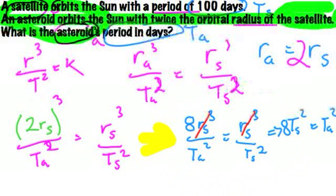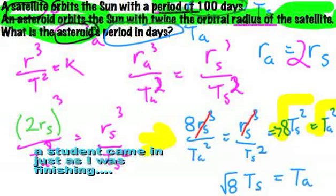So this just becomes... We can solve that by just rooting both sides. So we can just root this side and root this side. That'll give us the square root of 8 times T_S equals T_A. And in this case, T_S is 100.